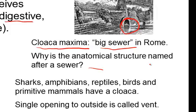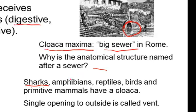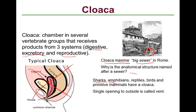You should know which groups have a cloaca: sharks, amphibians, reptiles, birds, and some primitive mammals — think egg-laying mammals like an echidna and a platypus. The single opening to the outside of the body through which products from these three systems exit is called the vent. When we dissect our frog, you'll see the vent of the frog.